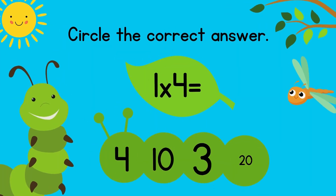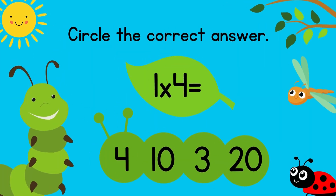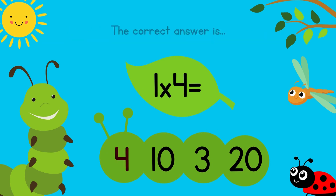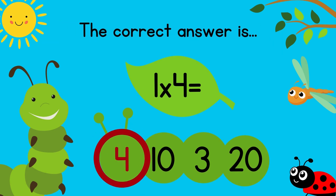Circle the correct answer. 1 times 4 equals? The correct answer is 4. Excellent!